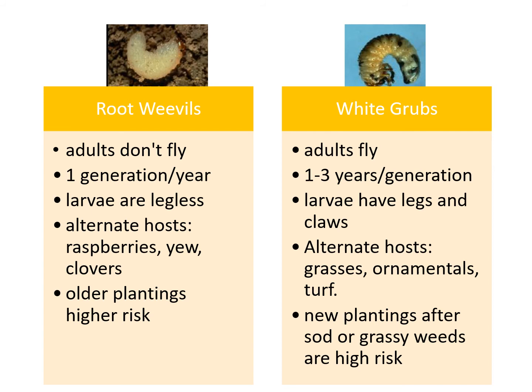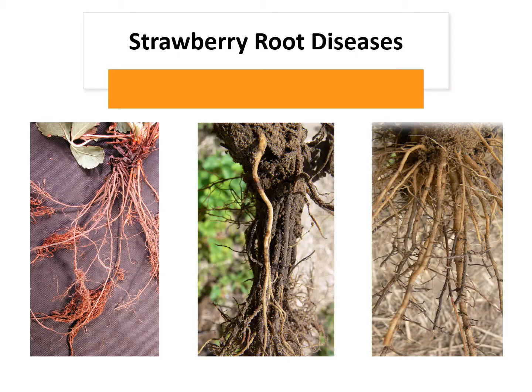To summarize the two insects: root weevils don't fly, their larvae are legless, and they are more likely a pest in older fields. White grub adults do fly, their larvae are bigger than root weevil larvae, have legs and claws, and are often found after sod or grassy weeds. Both are best controlled by crop rotation. To prevent white grub problems, strawberries should not be planted for at least two years after grass, pasture, or sod. To minimize root weevil problems, strawberries should not be planted for several years after strawberries and should not be planted adjacent to older fields.